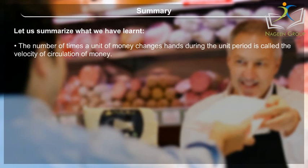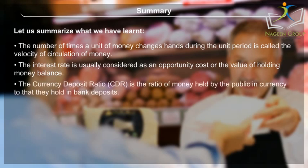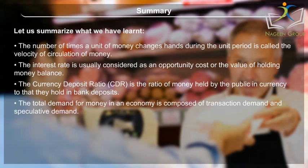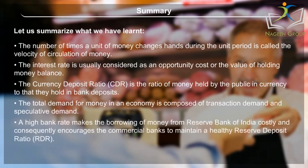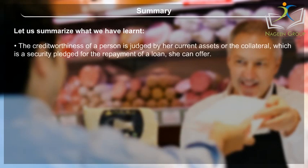The number of times a unit of money changes hands during the unit period is called the velocity of circulation of money. The interest rate is usually considered as an opportunity cost or the value of holding money balance. The currency deposit ratio (CDR) is the ratio of money held by the public in currency to that held in bank deposits. The total demand for money is composed of transaction demand and speculative demand. A high bank rate makes borrowing from the Reserve Bank of India costly and consequently encourages commercial banks to maintain a healthy reserve deposit ratio (RDR). The RDR is the proportion of total deposits commercial banks keep as reserves.